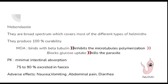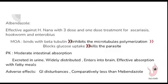Regarding pharmacokinetics, mebendazole has minimal intestinal absorption, and 75 to 90 percent of the drug is excreted in the feces rather than the urine. Its adverse effects are primarily GI-oriented, including nausea, vomiting, abdominal pain, and diarrhea.